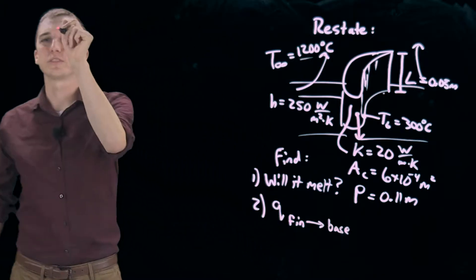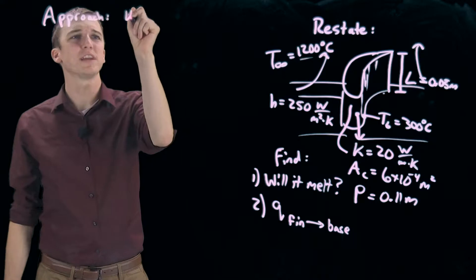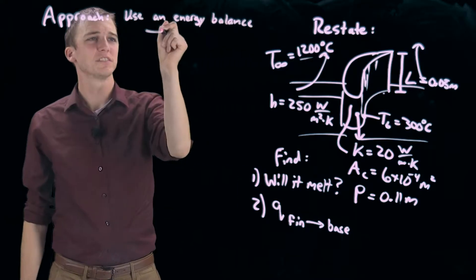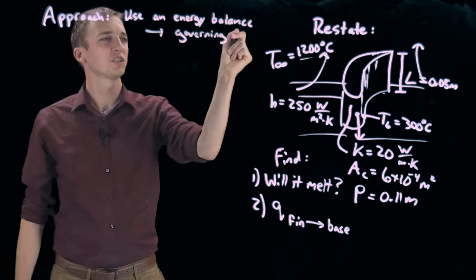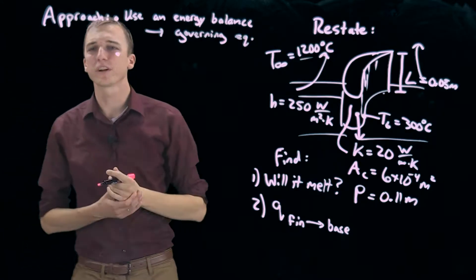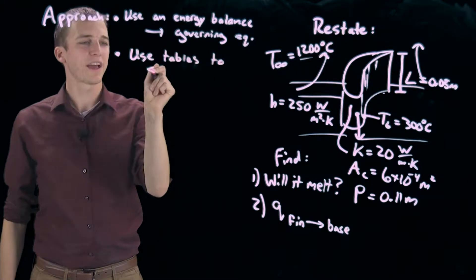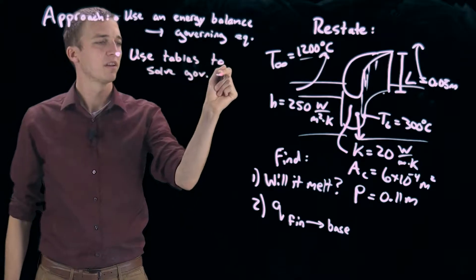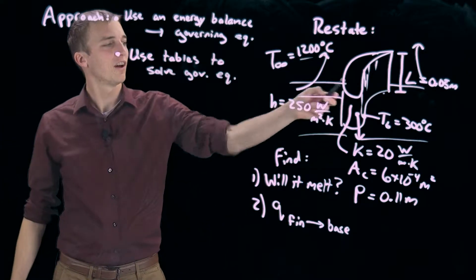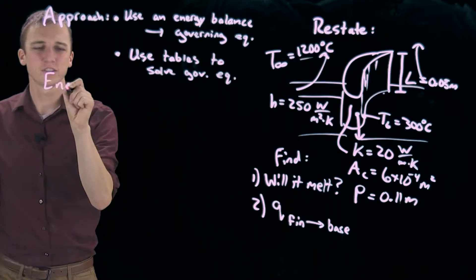Let's talk about our approach. We are first going to use an energy balance to find a governing equation. We're going to do that just to show the variable theta and how that's used. Once we have that governing equation, we're not going to use it. We're going to look up a tabulated solution, so use tables to solve that governing equation.